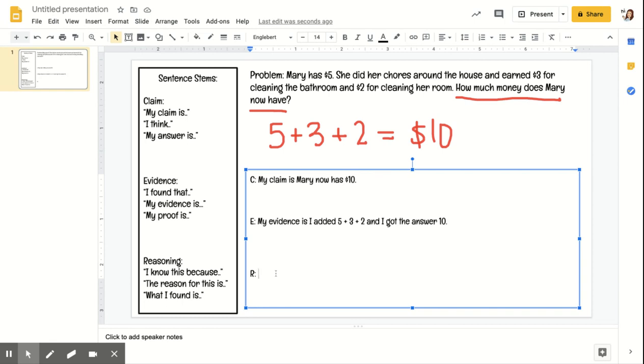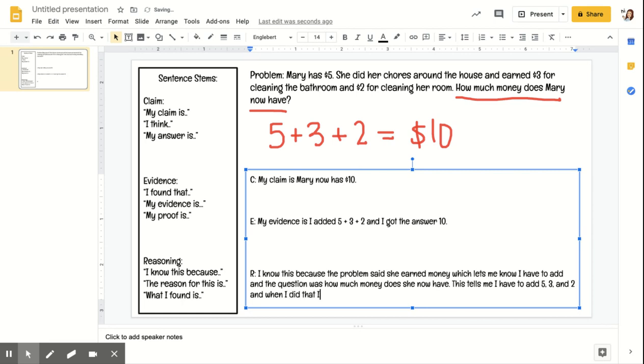And then your reasoning, like I said, is your claim plus your evidence. So I could say: I know this because the problem said she earned money, which lets me know I have to add. And the question was how much money does she now have. This tells me I have to add 5, 3, and 2. And when I did that, I got 10.